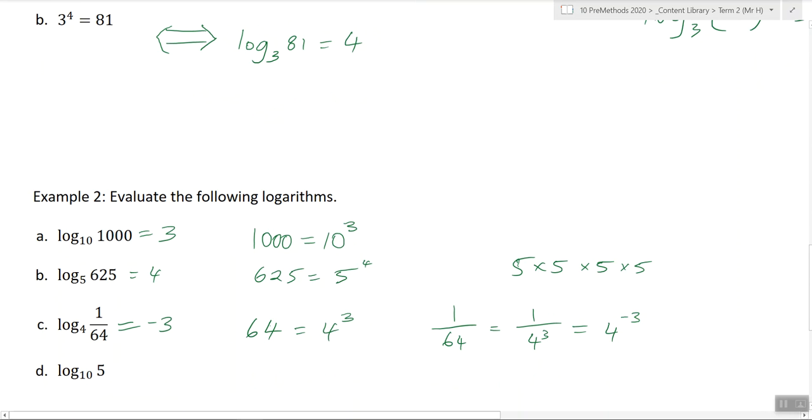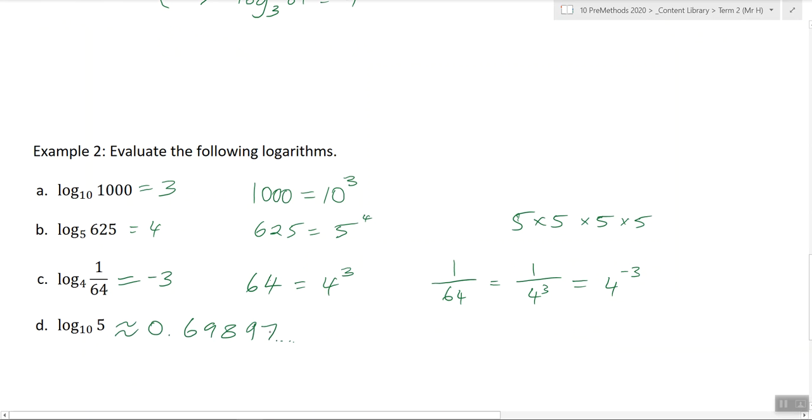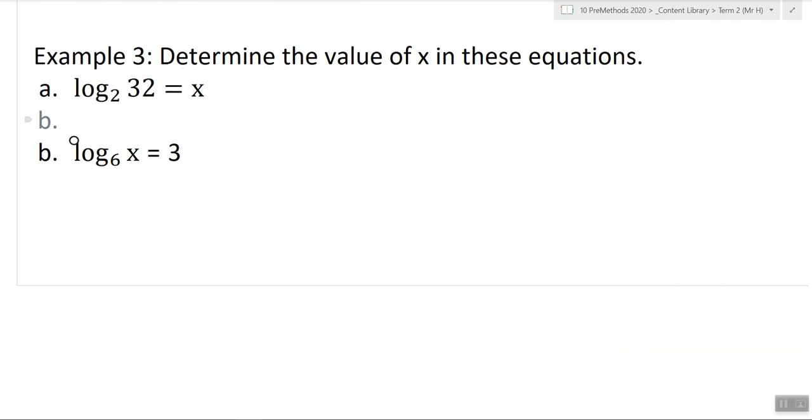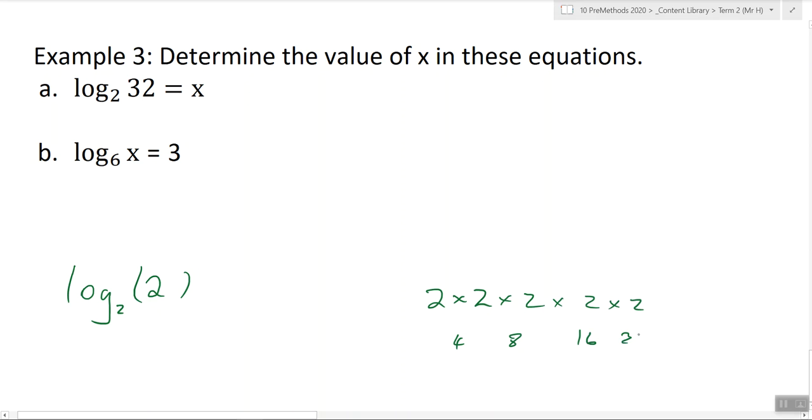So log base two of thirty-two. Same setting out that I just showed you. So we can write, see how it's base 2, so I'm going to write the base as 2 and I want to try and figure out what 32 is as 2 to the power of something. So let's try just writing it out. 2 times 2 is 4, times 2 is 8, times 2 is 16, times 2 is 32. So I've got 2 to the power of 5 is x. That would be worth a mark, and then writing 5 is equal to x is worth a mark.